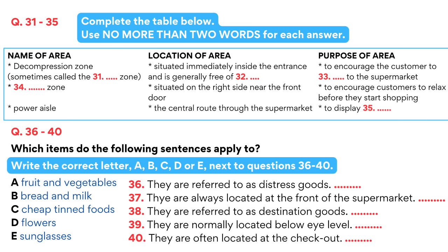Finally, let's have a look at the checkout area. We all know that sweets are deliberately placed within the reach of children at the checkout. But all kinds of things are displayed at checkouts these days. In fact, supermarkets can change what's on offer almost by the hour — it's a quick and easy way for them to rotate their stock. So, if the sun comes out, the checkout is an ideal place to display sunglasses. And if it rains, umbrellas can be placed there instead. Now, does anyone have any questions? That is the end of Section 4. You now have half a minute to check your answers.